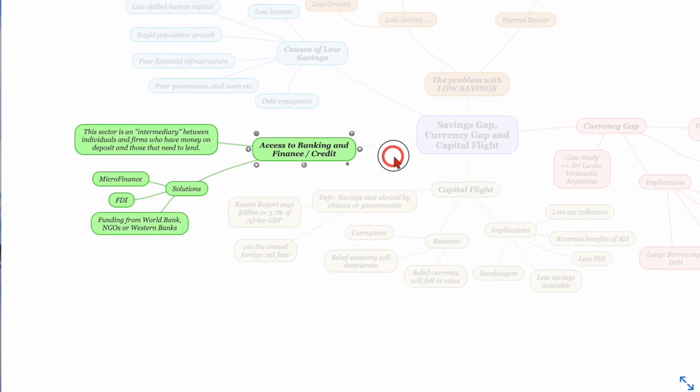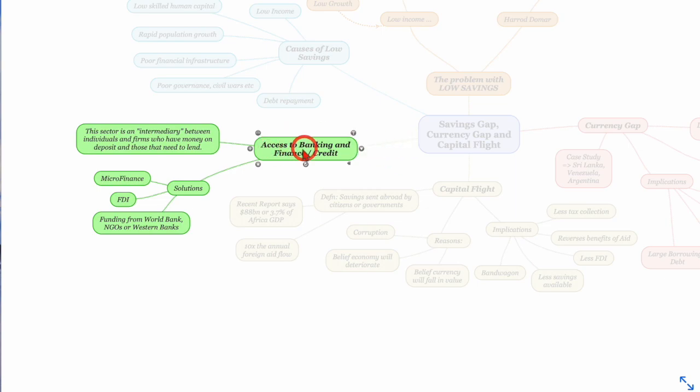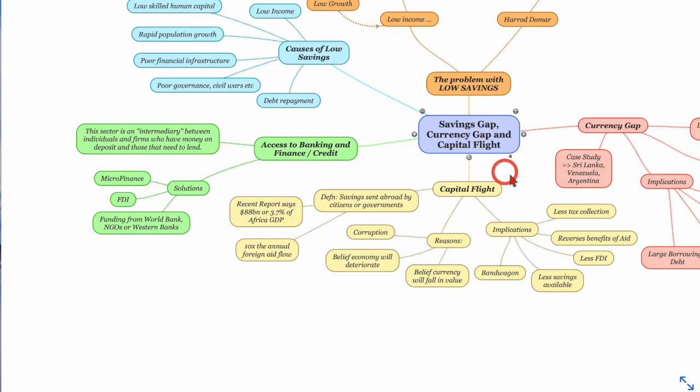And the last problem in this area is access to banking and finance and credit. If you don't have access, and a bank is only an intermediary between individuals with money to save, firms and individuals who need to borrow, if you don't have banking facilities, then you're not going to save your money in these facilities. So you're not going to get the investment and the borrowing that takes place. And there's a lot of countries around the world where the percentage of population with a bank account is worryingly low because they simply don't trust it. And so there are some solutions which we'll look at in other videos to try and help that.